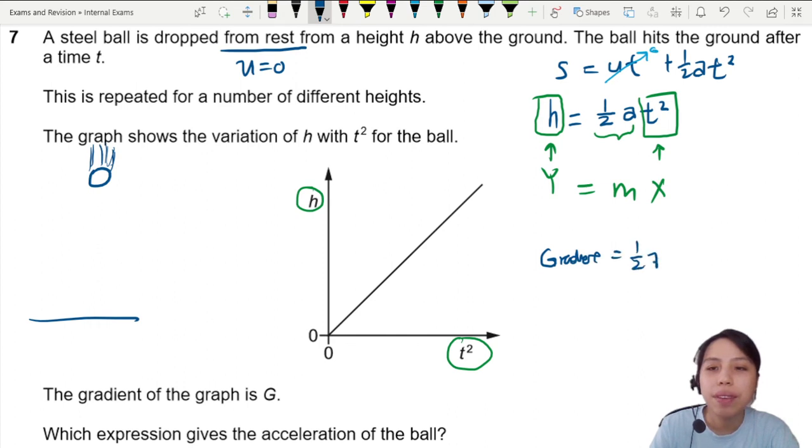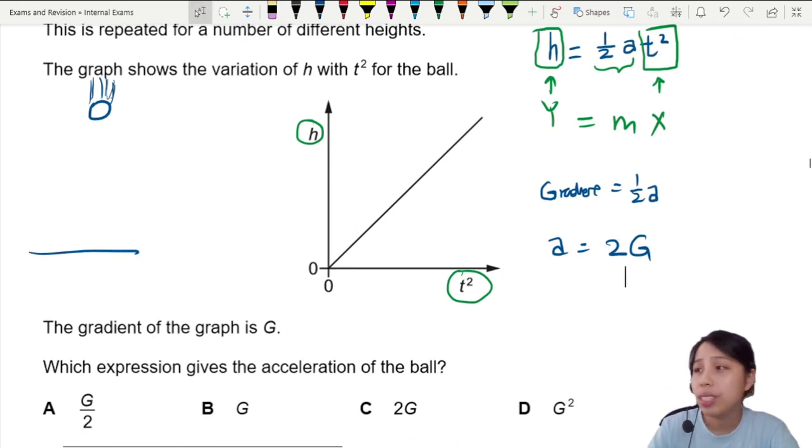So I want to find a. That will be two times my gradient. We look and see the answer 2G is down here, so we choose 2G.